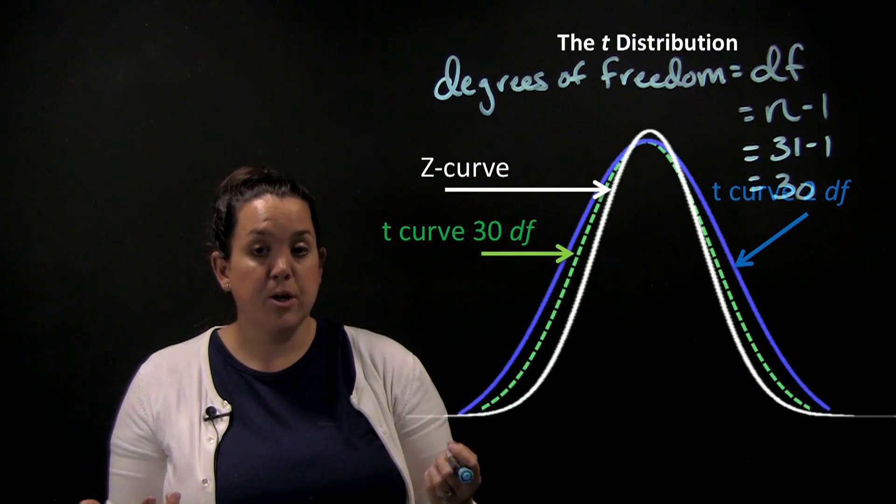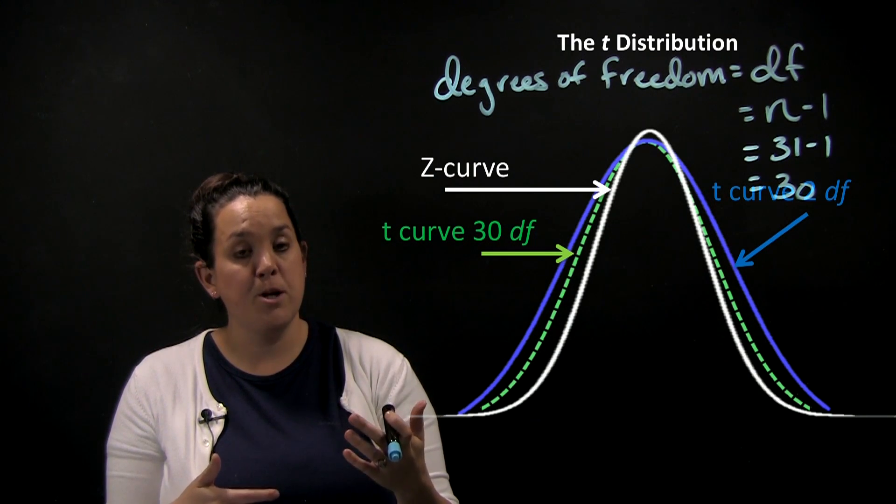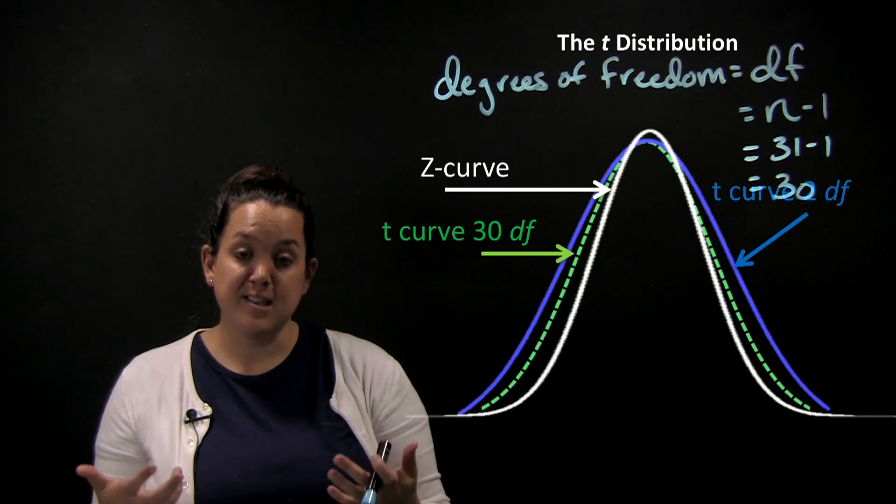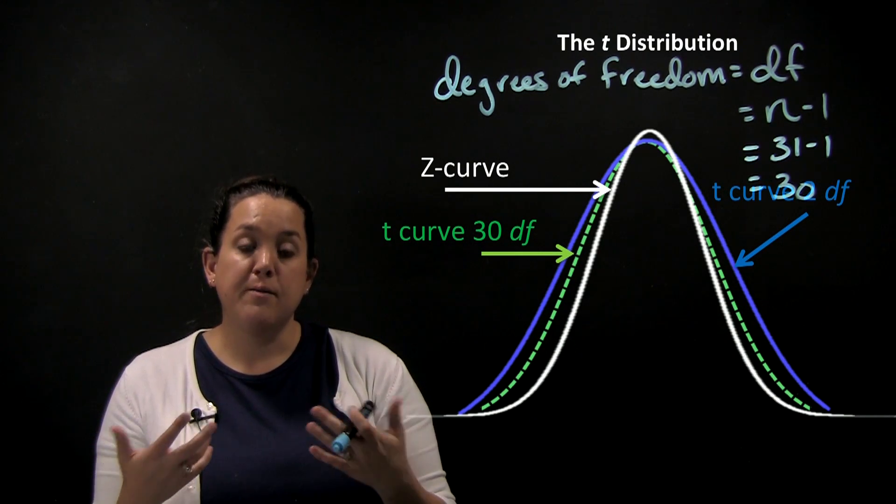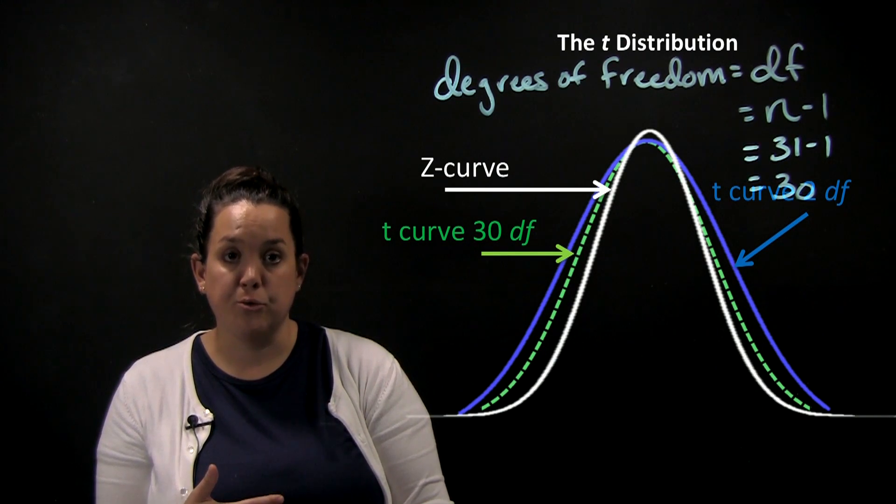The z-curve and a t-curve are kind of similar, but the t-curve is going to adjust because now we have sample information and we don't have population information. Because we have added estimation of the population with this quantitative data, we have to move to a distribution that accounts for that, which is what the t-distribution will do for us.